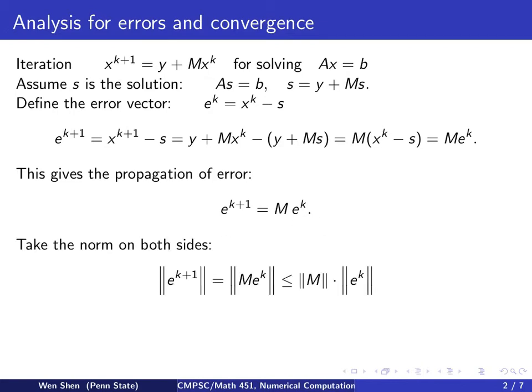We now take norm on both sides. The norm of e^{k+1} will equal to the norm of this matrix and vector product. By using the property that this is bounded by matrix norm times vector norm, now we have this inequality.